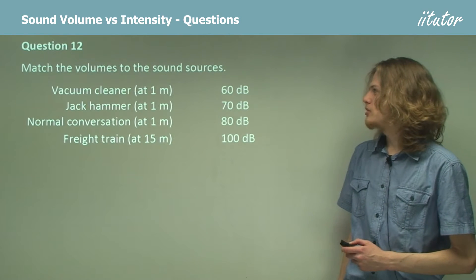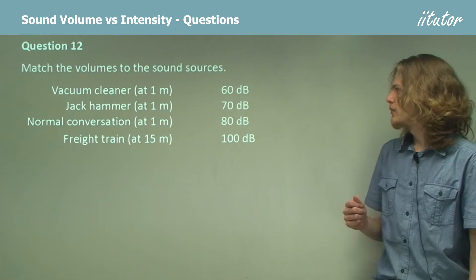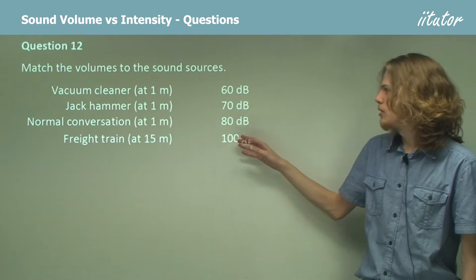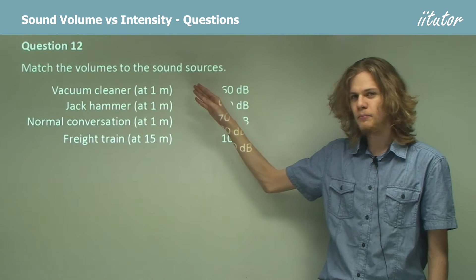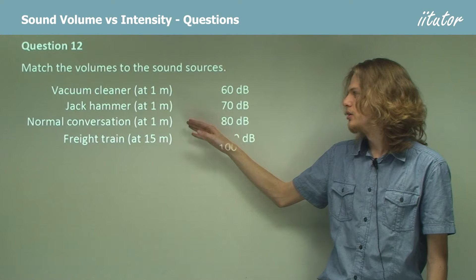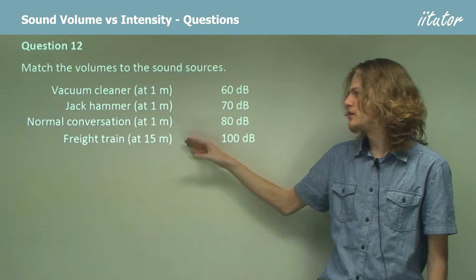Question 12. Match the volumes to the sound sources. Now let's take a look at these. We have 60, 70, 80, and 100 decibels. We have four different events. A vacuum cleaner, a jackhammer, normal conversation, and a freight train.